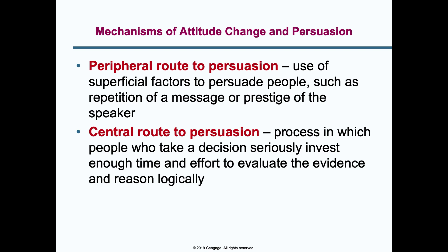The central route to persuasion is less about emotion and more about thought and analysis. People take a decision seriously, spend time thinking about it, look at evidence, and reason through it. Going back to the house example: instead of choosing based on a beautiful day, you choose based on the worth of the house — its quality, neighborhood, and value. This is the central route, based on logical reasoning, decision-making, and careful evaluation.